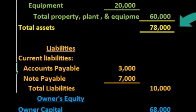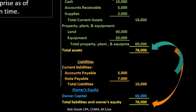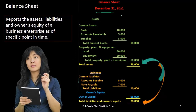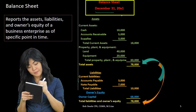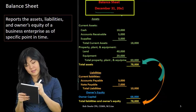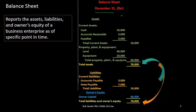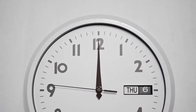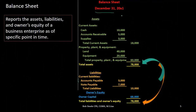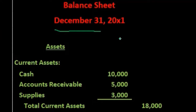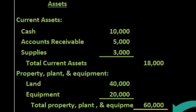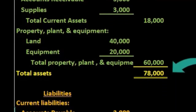We can report cash as of one date, but we cannot report revenue as of one date. Saying revenue as of December 31st has no meaning. However, you can say, as of December 31st at 12 o'clock midnight, this is how much cash we have. That is the major difference between balance sheet accounts and income statement accounts.